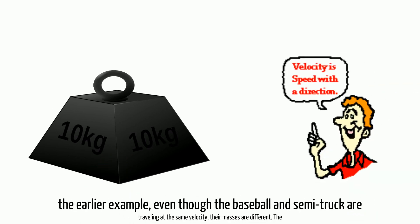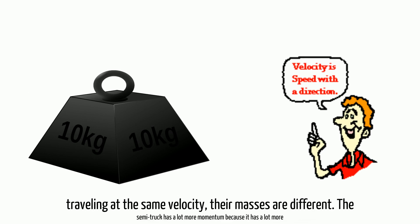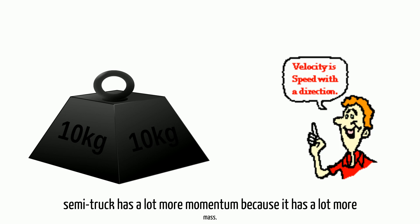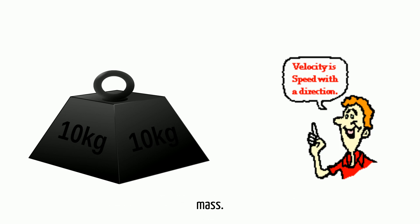As stated in the earlier example, even though the baseball and semi-truck are traveling at the same velocity, their masses are different. The semi-truck has a lot more momentum because it has a lot more mass.